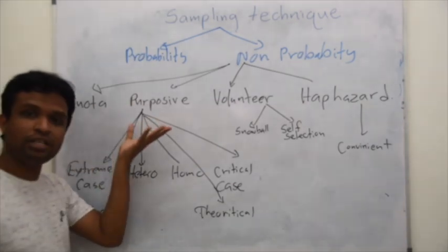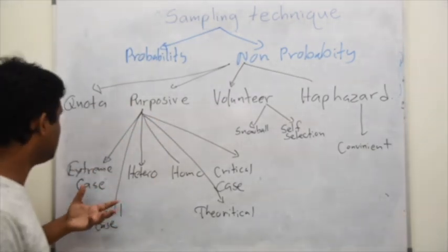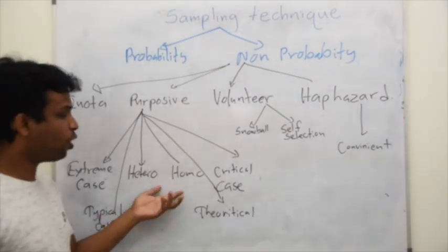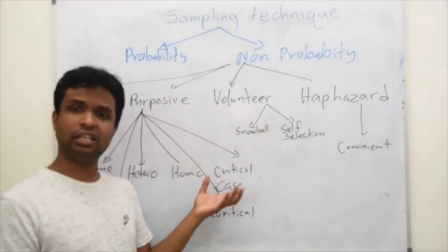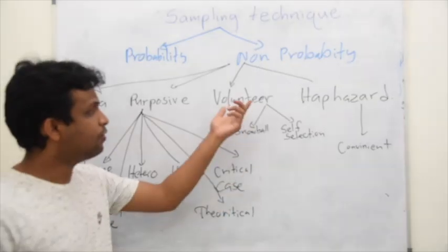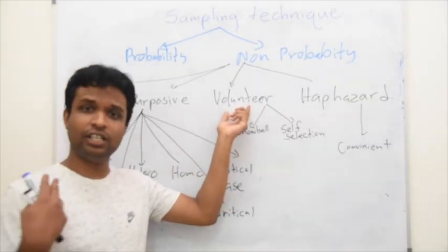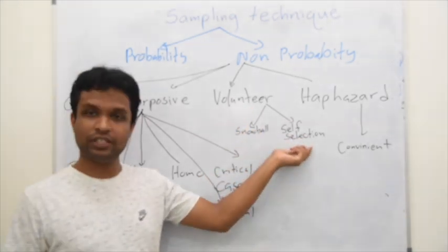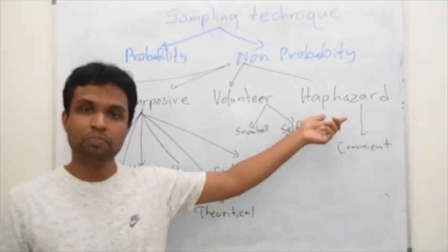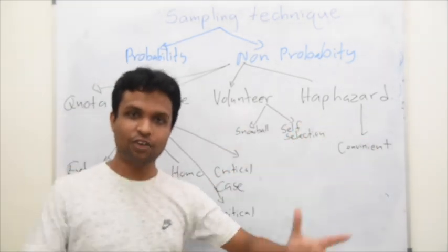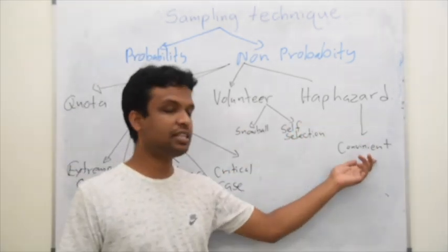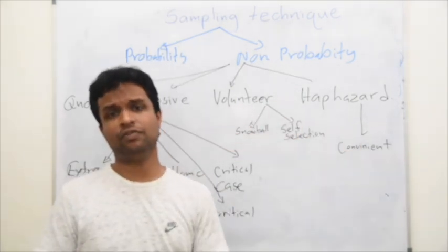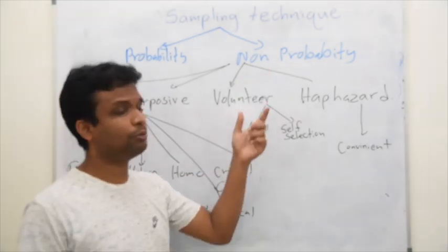And purposive sampling, there are several types of purposive sampling techniques like extreme case, typical case, heterogeneous, homogeneous, theoretical, critical case, many types. And volunteer technique, when they are volunteering, it is not random. We have snowball technique and self-selection techniques. Haphazard, no proper way of sampling, one of the main important things is convenience sampling. There are so many other sampling techniques that we can discuss under non-probability sampling.